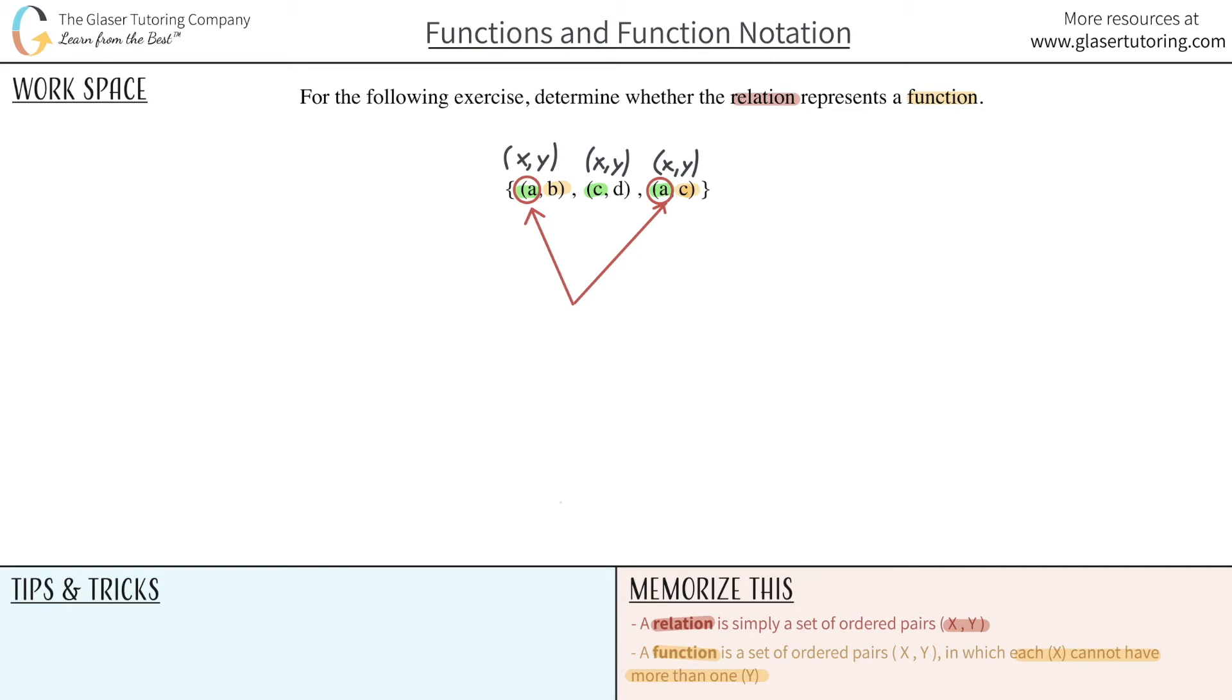But what do we have here? We have the case where this individual a does take on two or more values. It can be b at one point and c at another. And therefore, it violates the definition of what a function is. And I can then say that it is not a function.